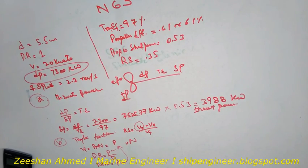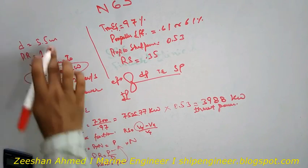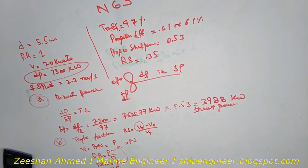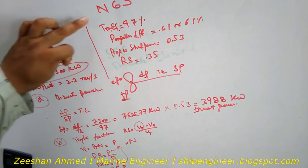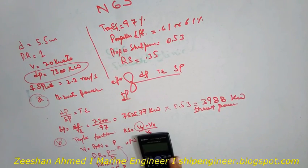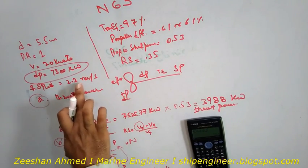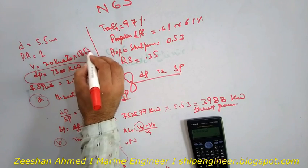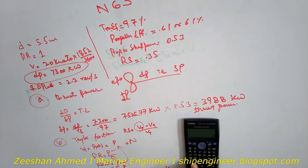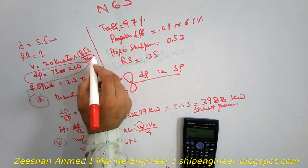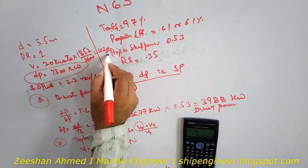Pitch P equals pitch ratio into diameter, which is 1 into 5.5 equals 5.5 meters. So VT equals 5.5 into 2.2, giving us 12.1 meters per second. We also convert the ship speed of 20 knots to meters per second: 1852 divided by 3600 into 20 equals 10.2 meters per second.